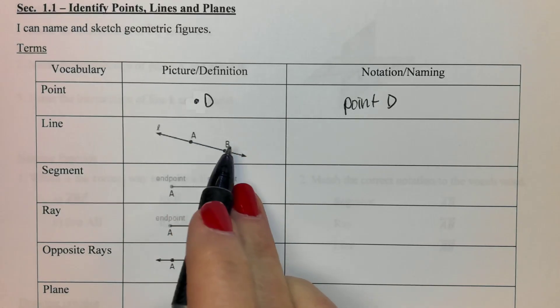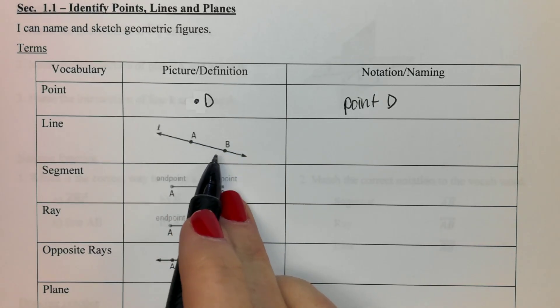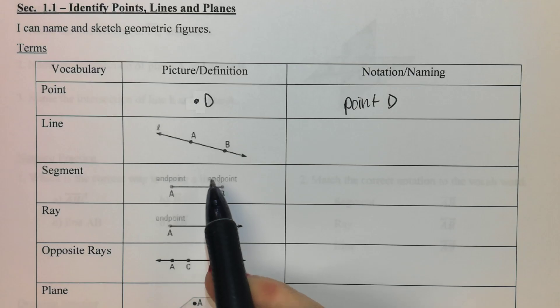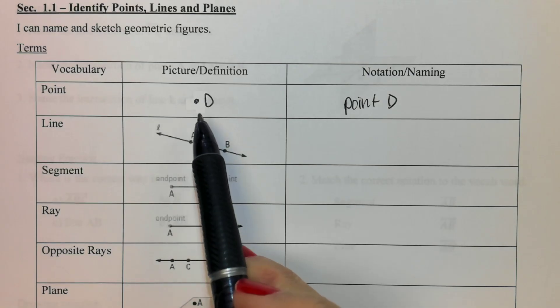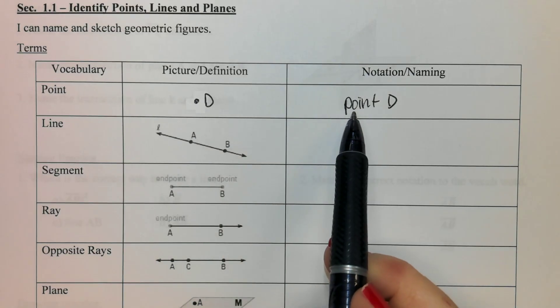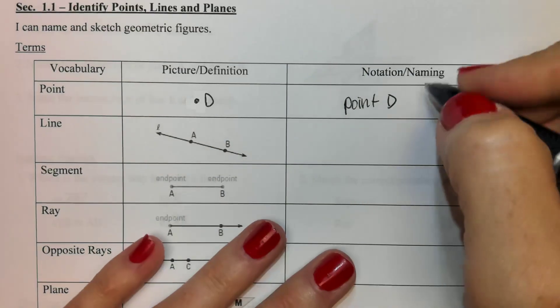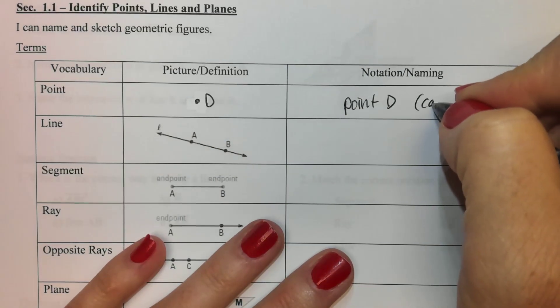Like this would be point A or point B. When we're talking about things, we want to use the right vocab, and this one's called a point. It's always a capital letter.